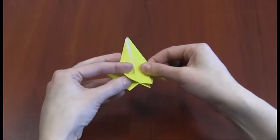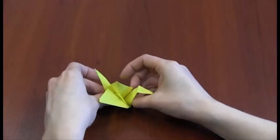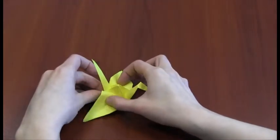You may need to spread the X at the bottom of the shape apart a little bit to help it stand, and that might require some adjustment to the wings. But at this point, you've finished your origami crane.